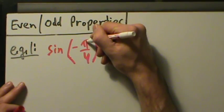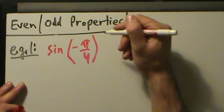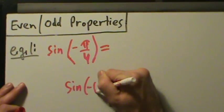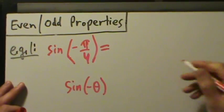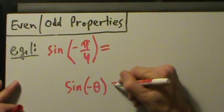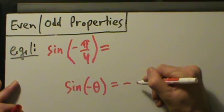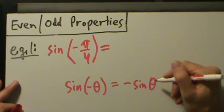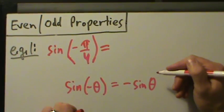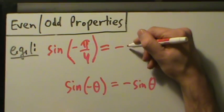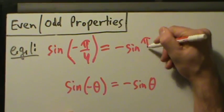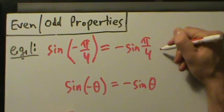So sine of negative pi over 4 — remember, sine of negative theta, as discussed in the last video, equals negative sine of theta. So sine of negative pi over 4 equals negative sine of pi over 4.